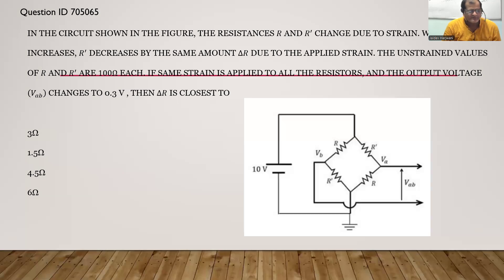Hello students, let us see this problem from CSIR NET. You have been given a circuit and in the question they say that the resistance value changes with strain. The unstrained values of R and R' are given by 100 ohms each, both are equal. Now we have to calculate the Vab.